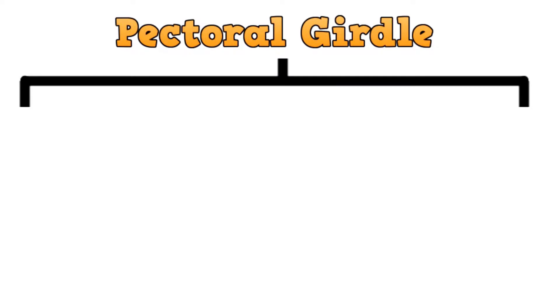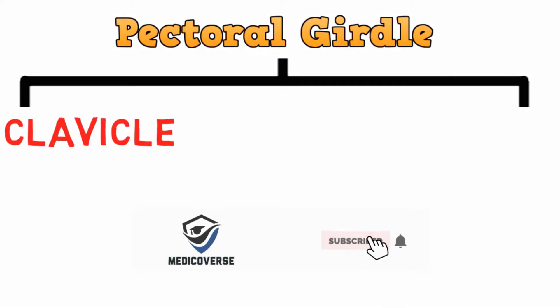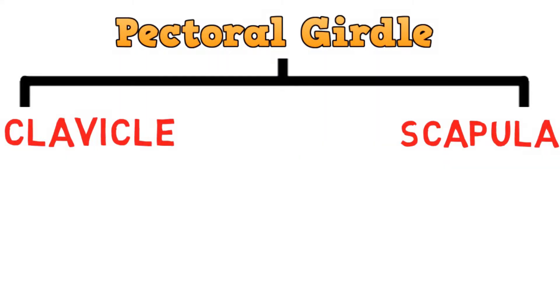The pectoral girdle consists of two bones, the clavicle and the scapula. For this video, we will focus on the clavicle.